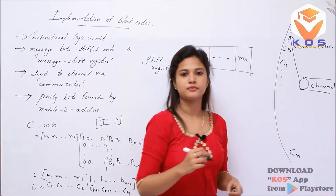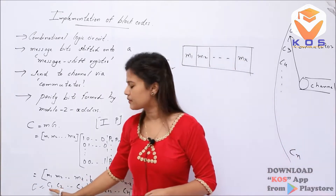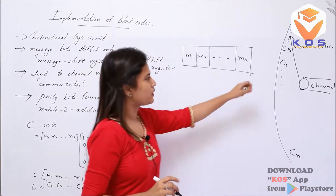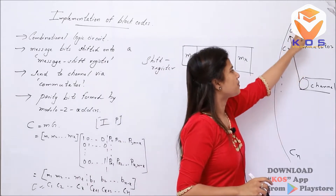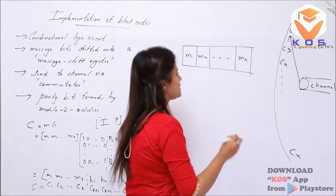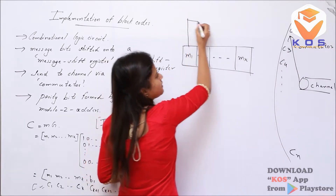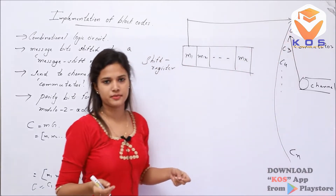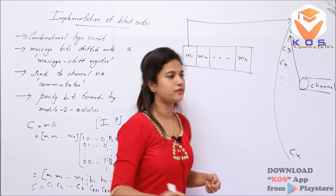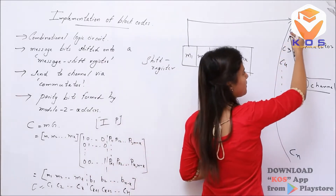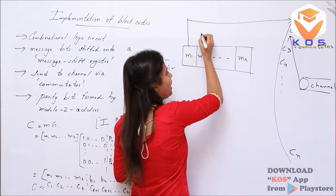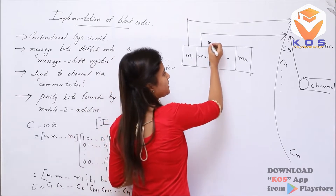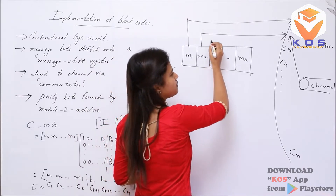Cn is added. C1 is actually equal to M1 itself. If we get C1 data, it will be from the M1 position. C2 will be equal to M2 itself. If we get M3 data, we will get C3 data.